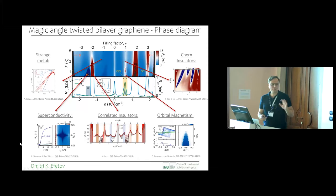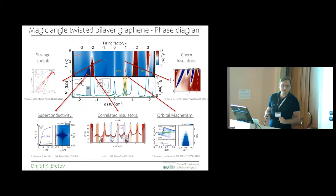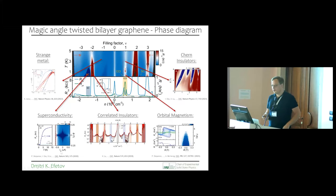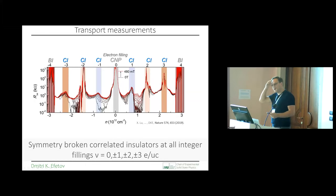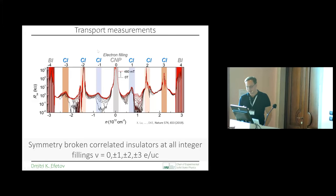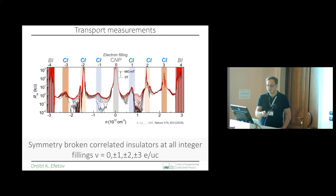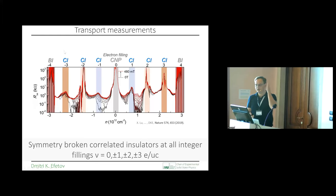I'll spend some time going through each phase in more detail. For transport measurements on correlated insulators, we measure resistance as a function of electron filling. You can see that the resistance jumps orders of magnitude whenever there are one, two, three, or four electrons per unit cell. In a single-particle picture from the band structure, we would not expect any insulating states here — the whole band supposedly should be just metallic.